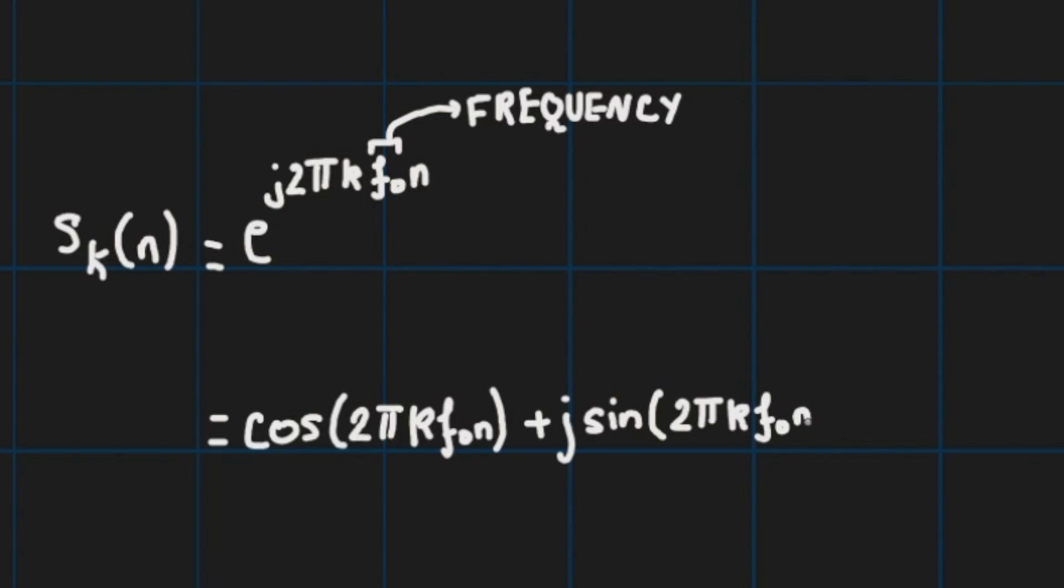cos(2πkf₀n) + j·sin(2πkf₀n), then the same argument applies to the discrete time complex exponential that is s_k(n) is periodic if and only if f₀ is rational.